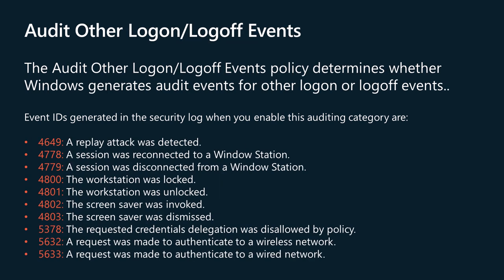The Audit Other Logon/Logoff Events policy determines whether Windows generates audit events for other logon or logoff events. These other logon or logoff events include: a remote desktop session connects or disconnects; a workstation is locked or unlocked; a screensaver is invoked or dismissed; a replay attack is detected — this event indicates that a Kerberos request was received twice with identical information, which could also be caused by network misconfiguration; a user is granted access to a wireless network, which can be either a user account or the computer account; and a user is granted access to a wired 802.1x network. Logon events are essential to understanding user activity and detecting potential attacks. Event IDs generated in the security log when you enable this auditing category are displayed on the screen. More detail is available in the article linked below.